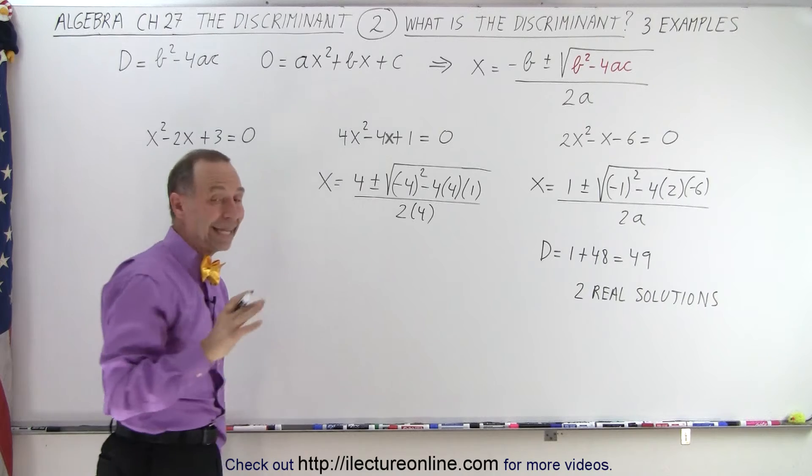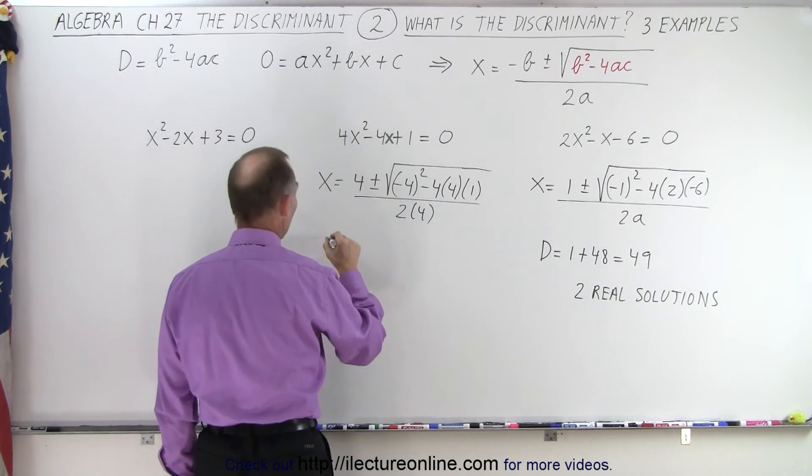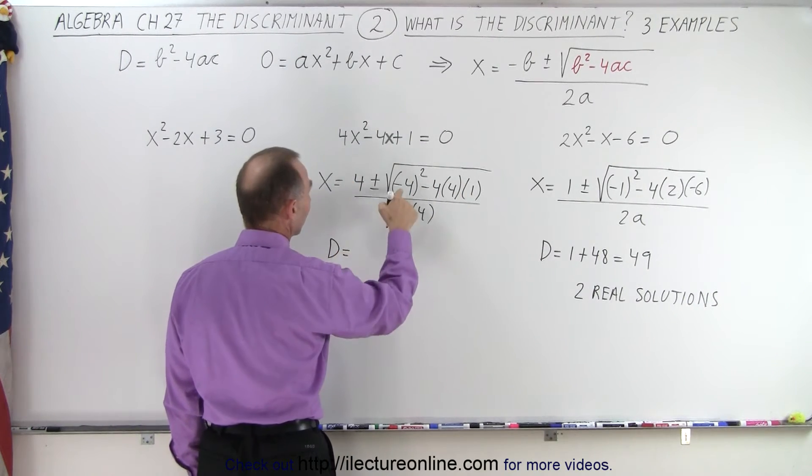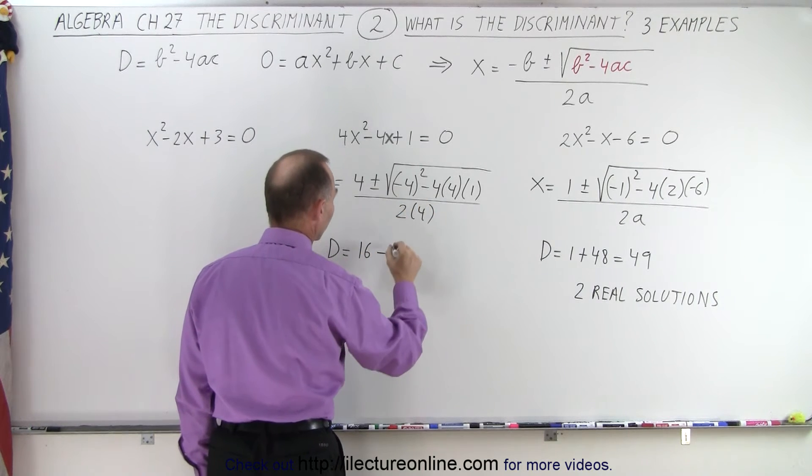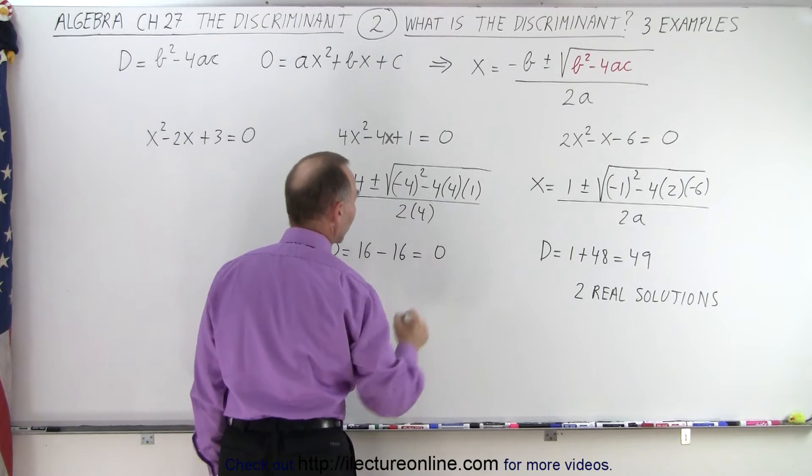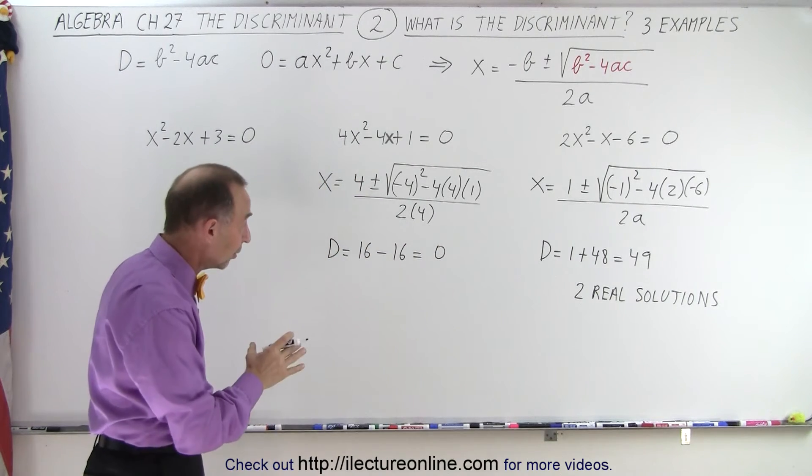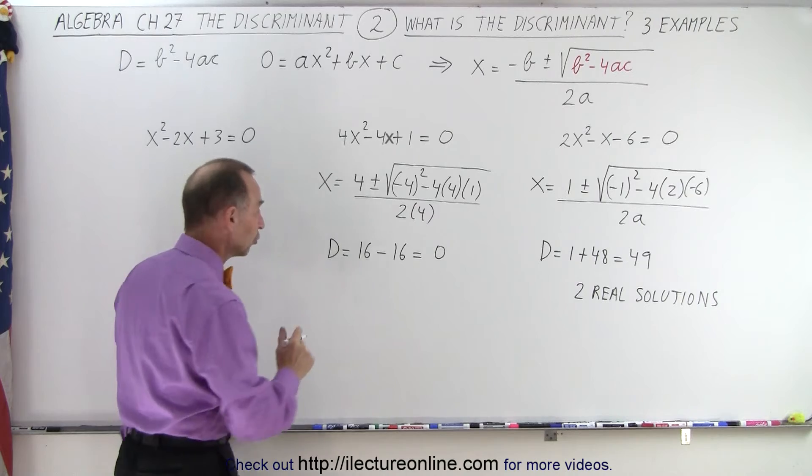We're only interested in what's inside the radical. We'll call that the discriminant, and that equals (-4)² which is 16, minus 4 times 4 which is 16, which equals 0. That means if the discriminant equals 0, there's only one real solution.